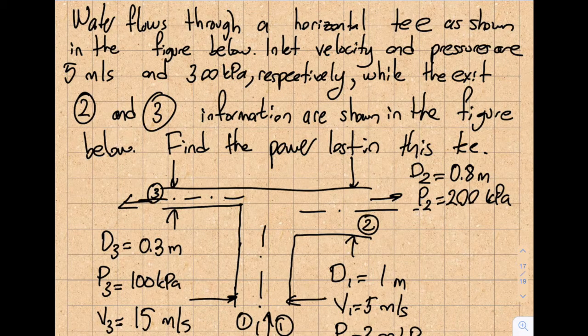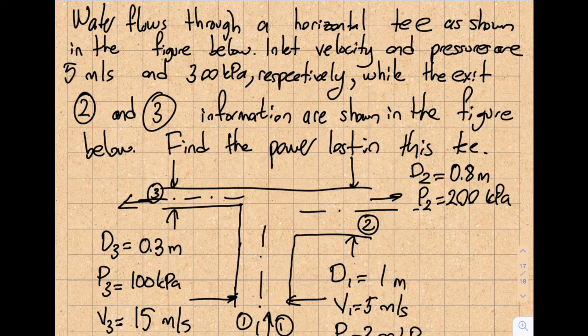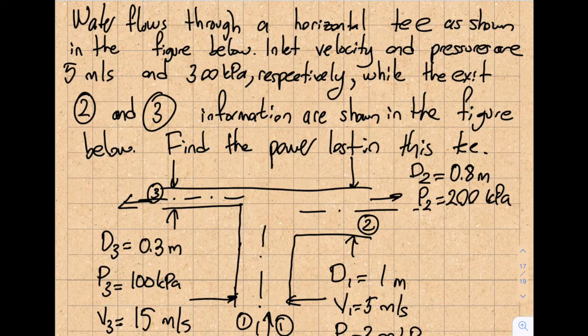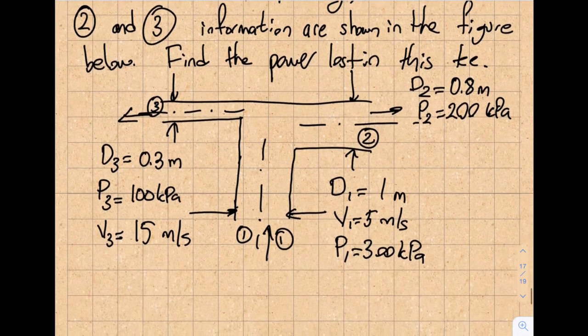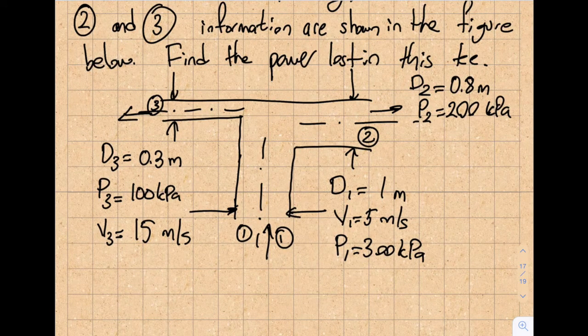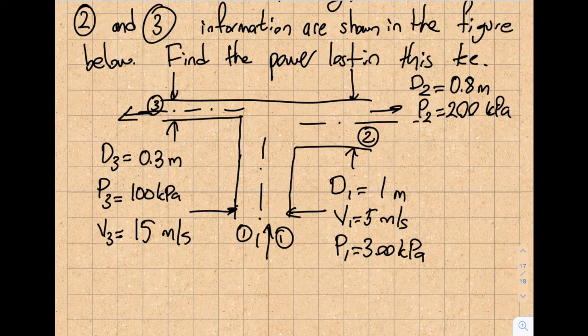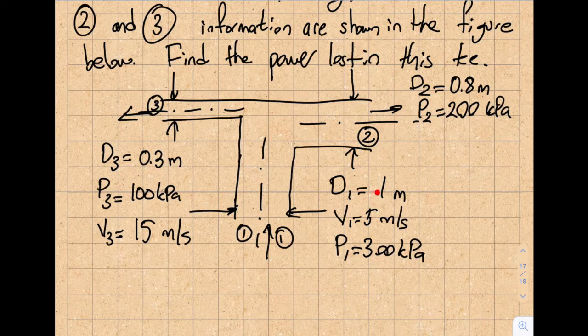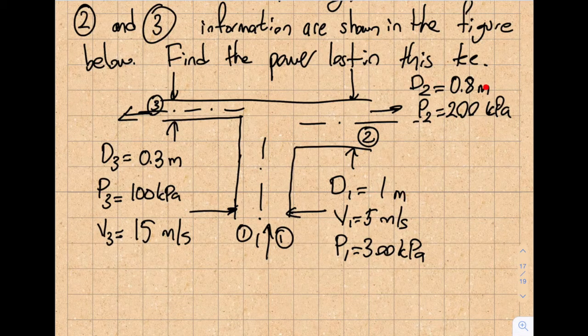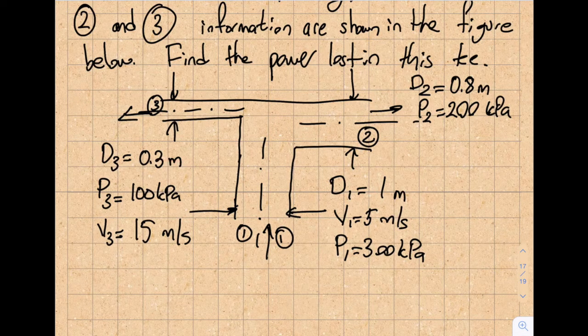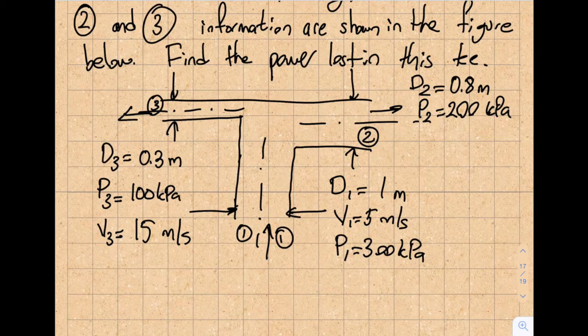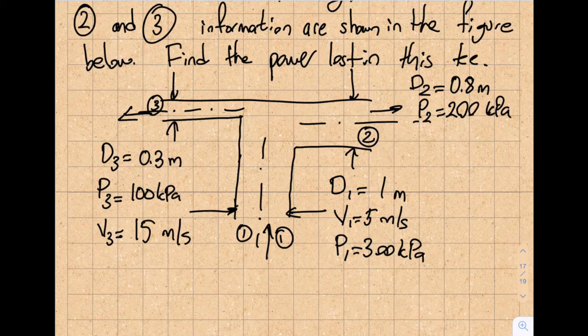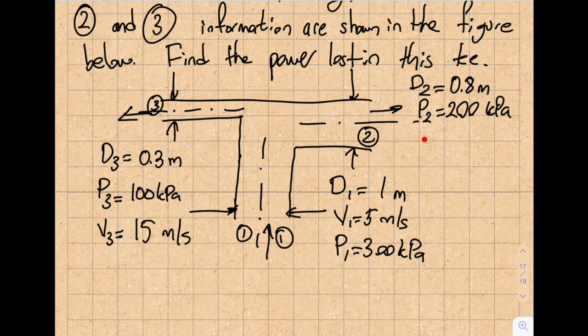Find the power lost in this T. I'm going to apply my steps that we established. First of all, let's look at what I am known and what I don't know. Let's take a look regarding the areas: D1 is 1, D2 is 0.8, D3 is 0.3. Good, so all my area information is supplied.